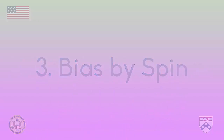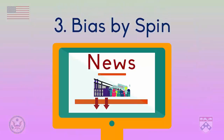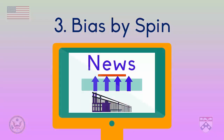The third type of bias we're going to introduce is bias by spin. When we talk about media, spin means giving a positive or negative point of view about a subject in order to change the opinion of the audience. Let's say that on Ronnie's site the article about the closing factory makes it seem like this is a terrible situation. The words that are used and the information that's included all make it very clear that we should think it's a bad thing. However, on Adathy's website the article about the closing factory has a much different feel. The words that are used and the information that's included all make it clear that the situation is good. Because both articles are talking about the same thing but trying to make the audience feel a different way about it, there is probably bias by spin.